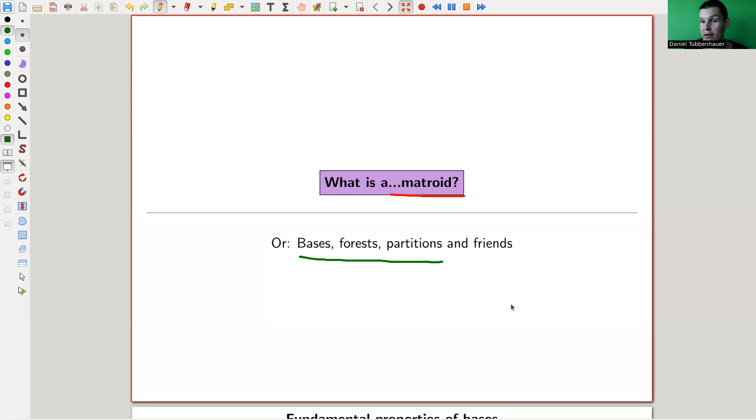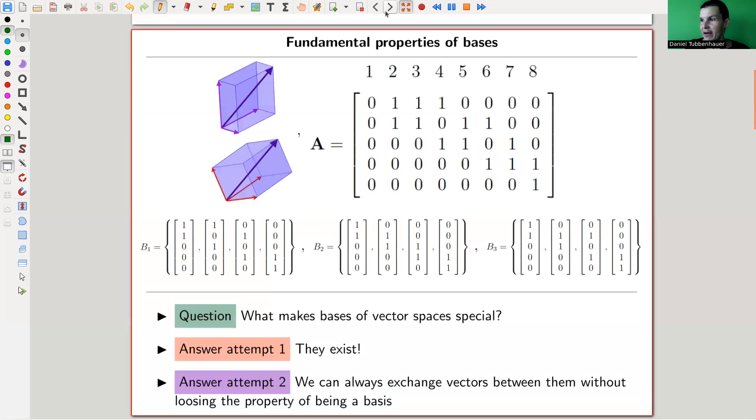So let's have a look. I just motivate by examples and then answer with a definition, which is surprisingly simple. It's just really, really easy. But anyway, we look at examples. So we take a matrix. Here's our matrix A. And it has some column vectors. We have eight of them. And we could ask the question, what are the subset of the column vectors that form a basis?